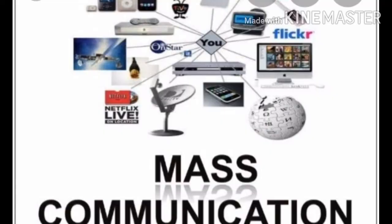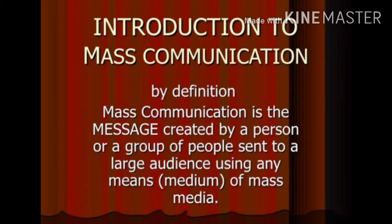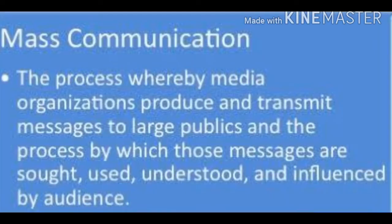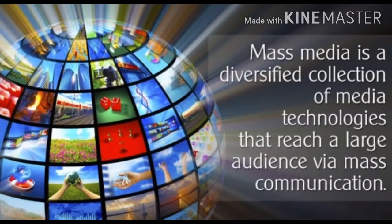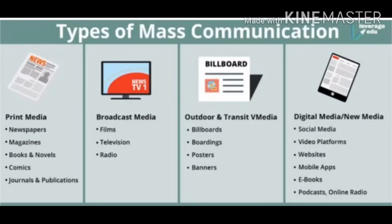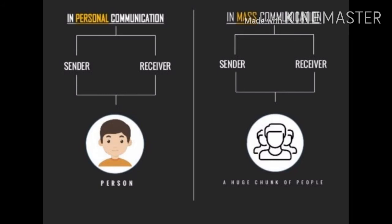The second type of communication is mass communication, which is used to convey messages or information to a large number of people at the same time. For it, we use radio, television, newspaper, books, etc. This communication is very easy, faster, and in fact instant in helping to convey information.